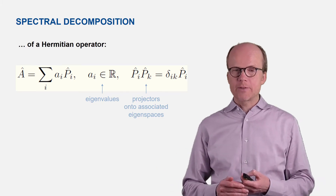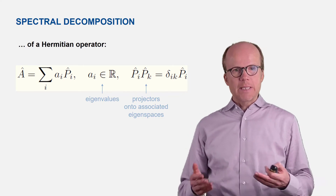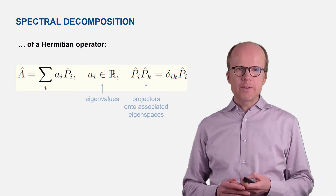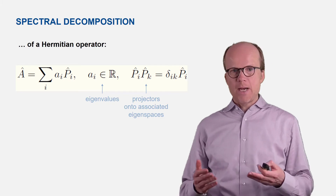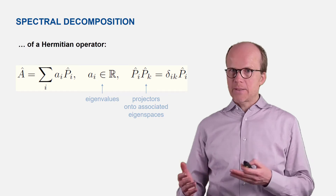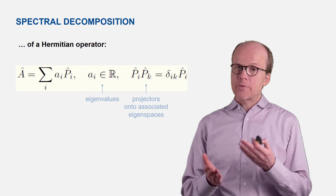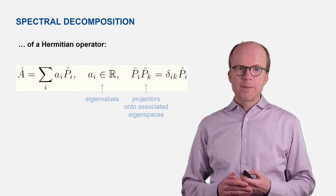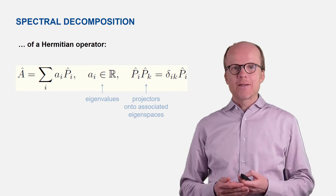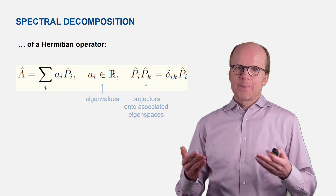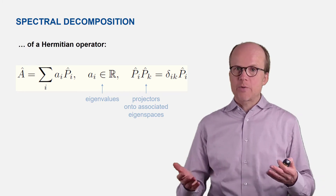The symbol delta_ik is the Kronecker delta: it is 0 if i and k are different, and 1 if i equals k. So P_i times P_k equals 0 if i and k are different — reflecting that the different eigenspaces are orthogonal — and P_i times P_k equals P_i if k equals i, which reflects idempotence: P squared equals P.